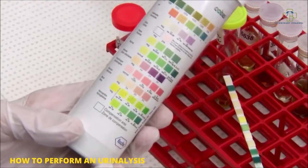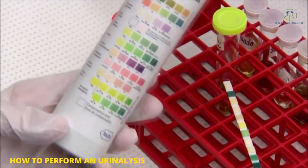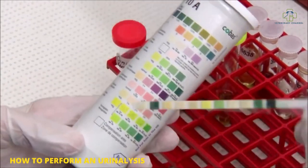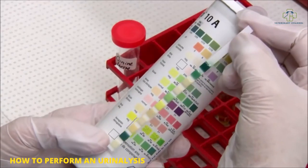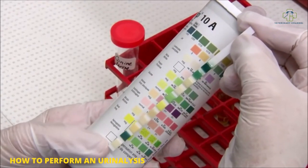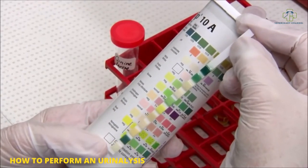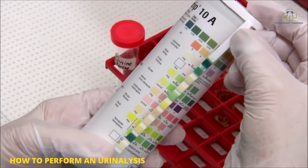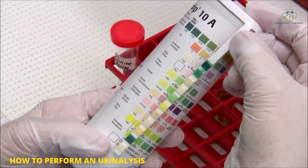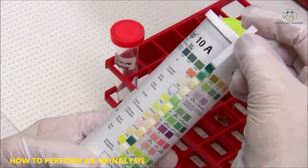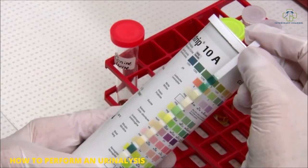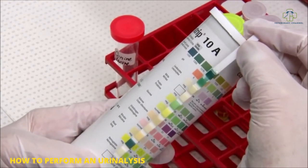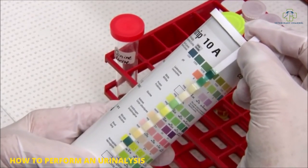We use a chemstrip 10a which is designed for an automatic strip reader. The very last square on your strip is going to correspond to the blank square at the bottom. You hold your strip with the handle at the top, and that last square corresponds to the blanking square at the bottom. To read your strip, you start with the specific gravity, which we don't read because it isn't accurate in animals.